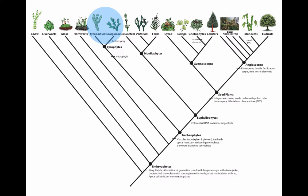The lycophytes arose about 400 million years ago and they're the earliest divergent lineage of vascular plants. So they split off and have evolved independently for some 400 million years. In terms of the number of species, they're the third largest group of the vascular plants after the flowering plants and the true ferns.